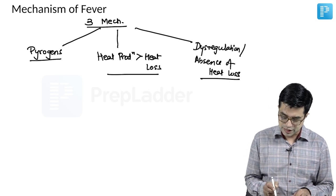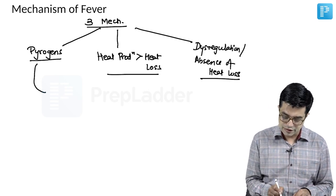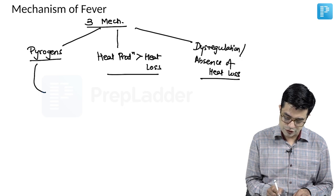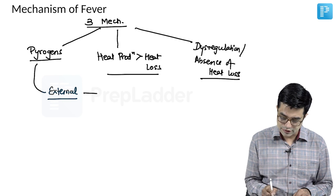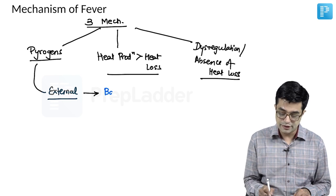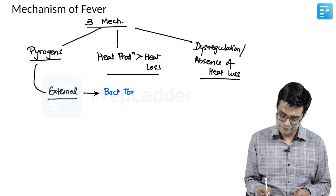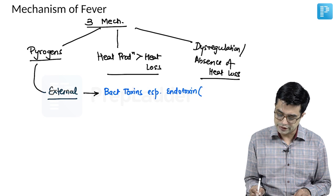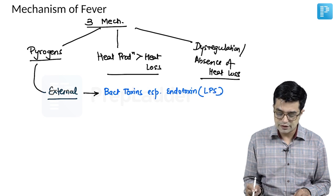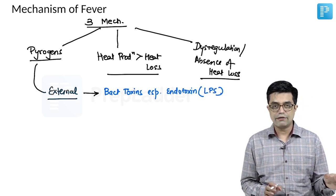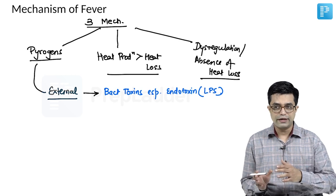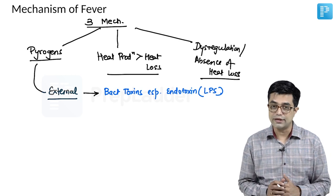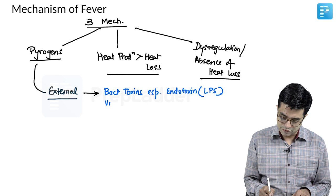Now, when we talk about pyrogens, the pyrogens can be divided into two parts. First is your external pyrogens. External pyrogens are the ones which include your bacterial toxins, especially your endotoxin. Gram-negative bacteria have endotoxin, also technically called as lipopolysaccharide, which acts both at the level of hypothalamus as well as releases endogenous pyrogens and leads to fever. It can be mediated by viral products.